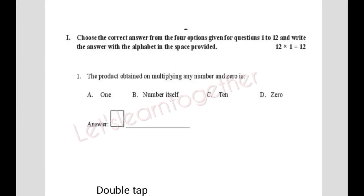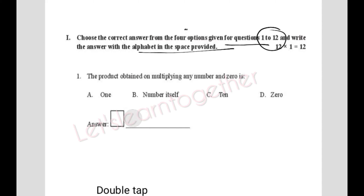The first section is 'Choose the Correct Answer' from questions 1 to 12 — these are MCQs. Each question carries one mark. You write the alphabet of your chosen option in the space, and also write the answer beside it.